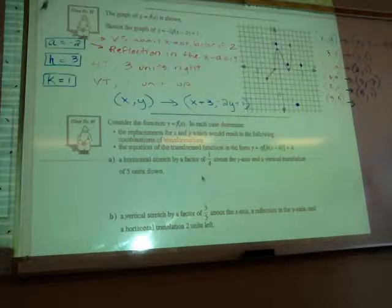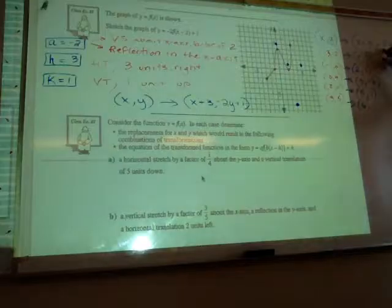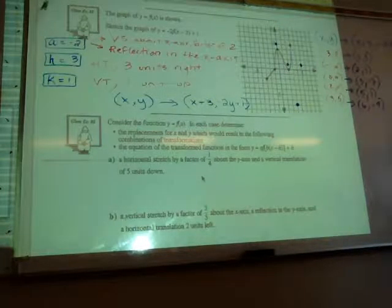And lastly, 3, 5. So 3 plus 3 is 6. 5 times negative 2 is negative 10, plus 1 is negative 9. So we're at 6, negative 9.